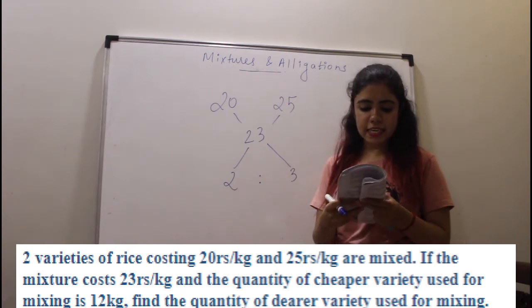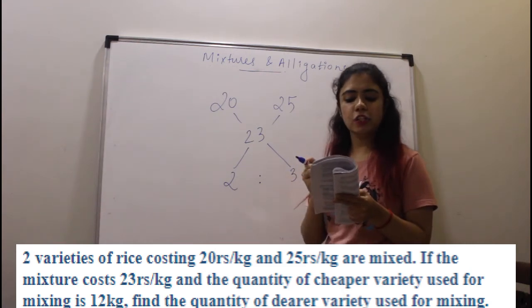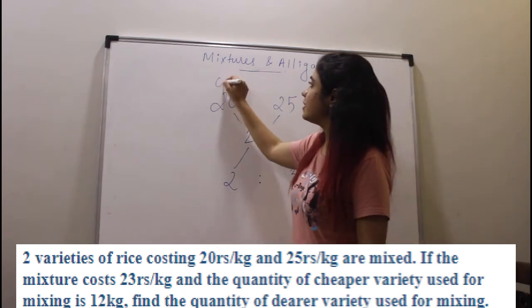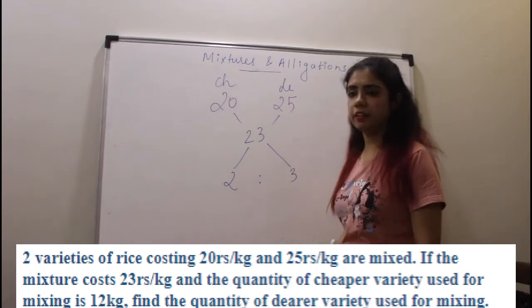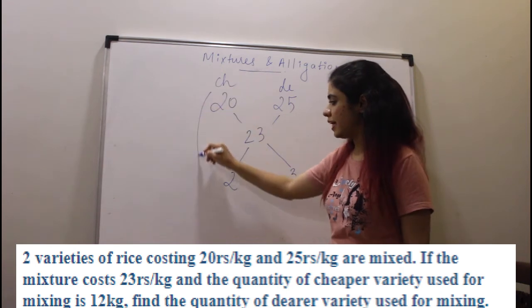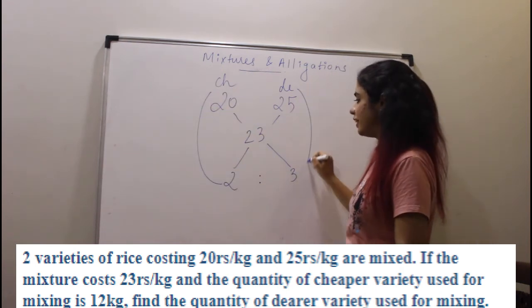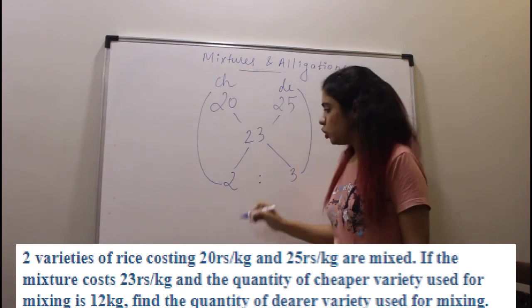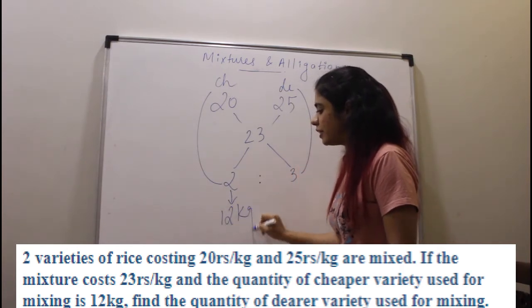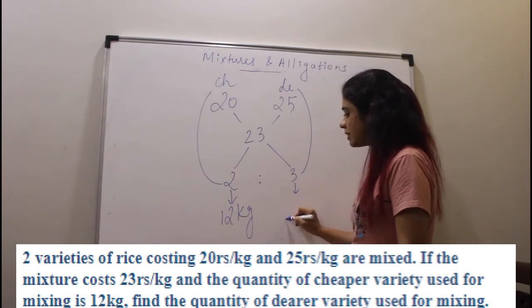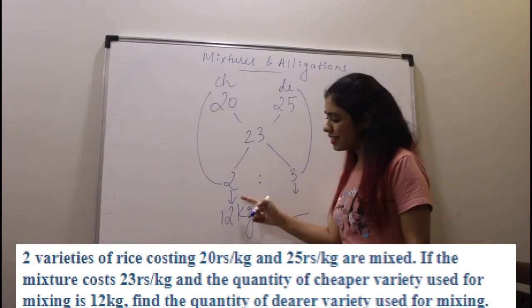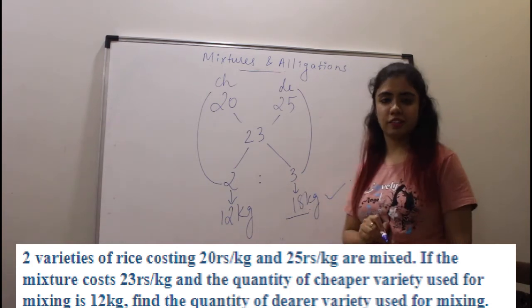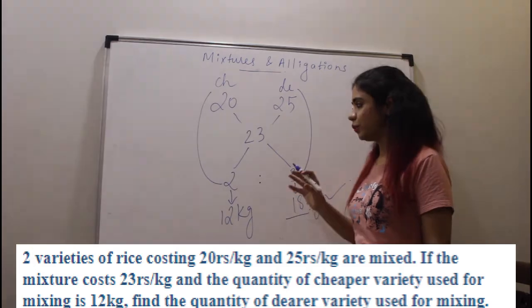They are saying the cheaper quantity is 12 kgs — what is the dearer quantity? This is your cheaper quantity standing for 2, and dearer standing for 3. But if 2 means 12 kgs, then 3 means 18 kgs. So the answer is 18 kgs of dearer variety.